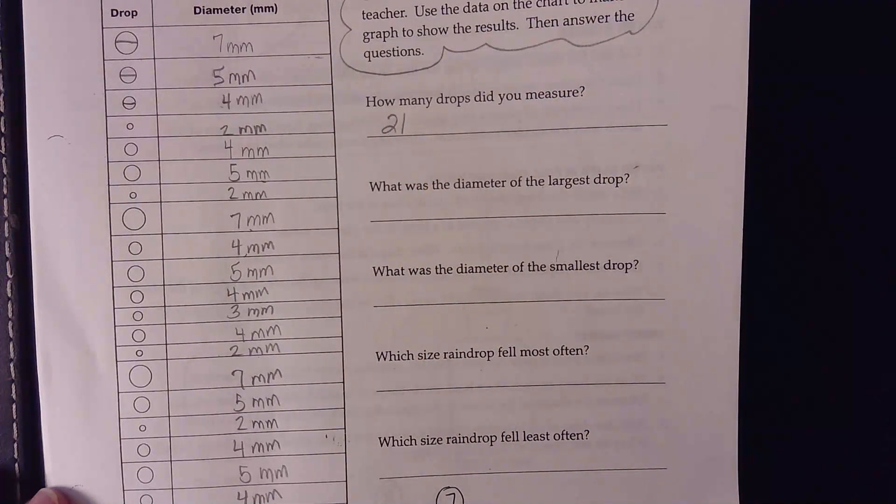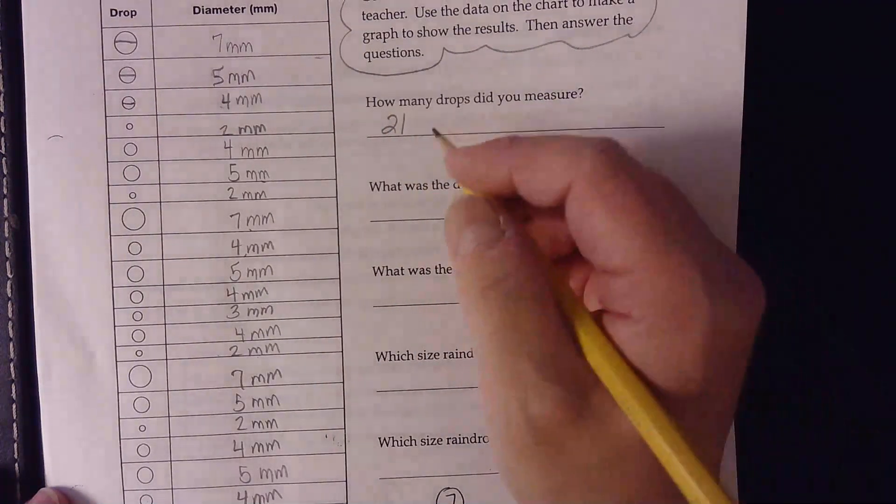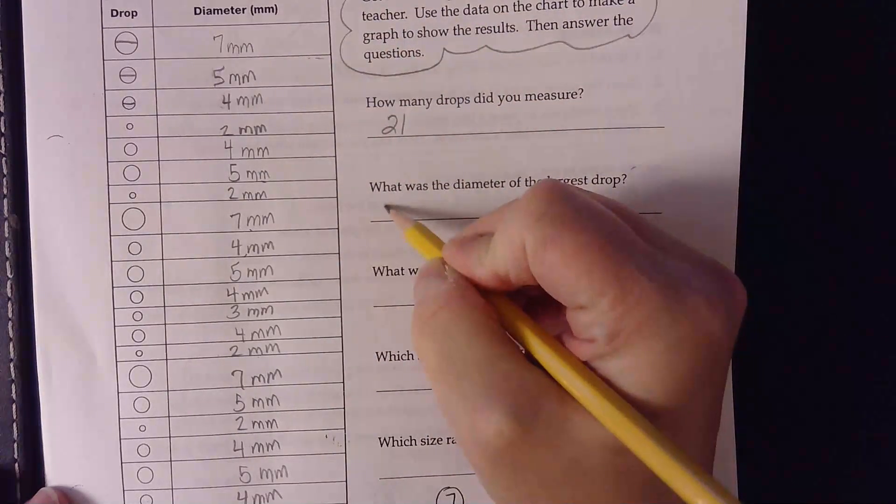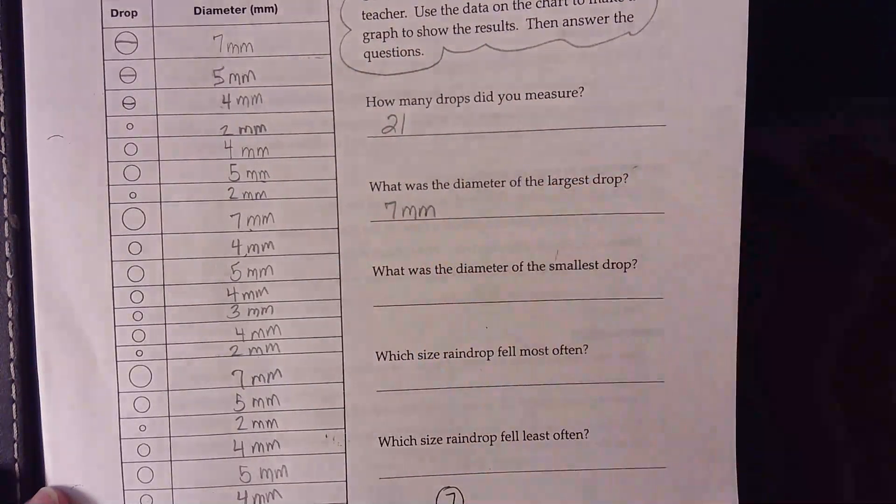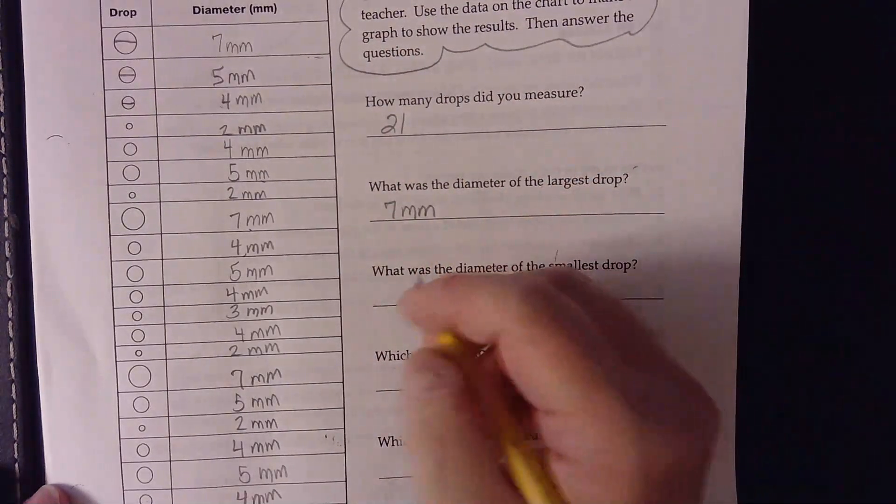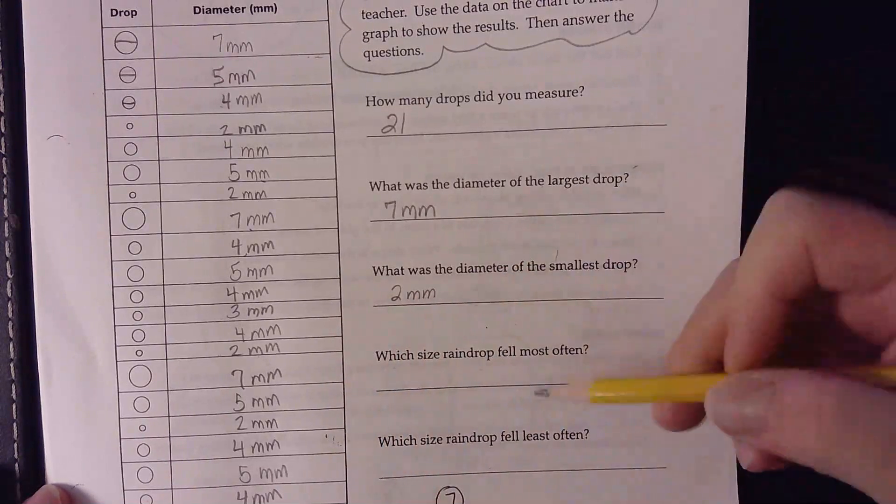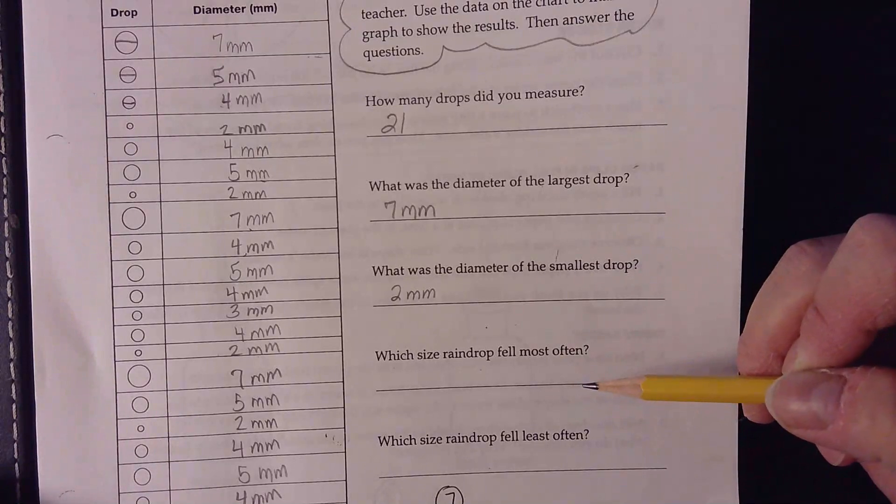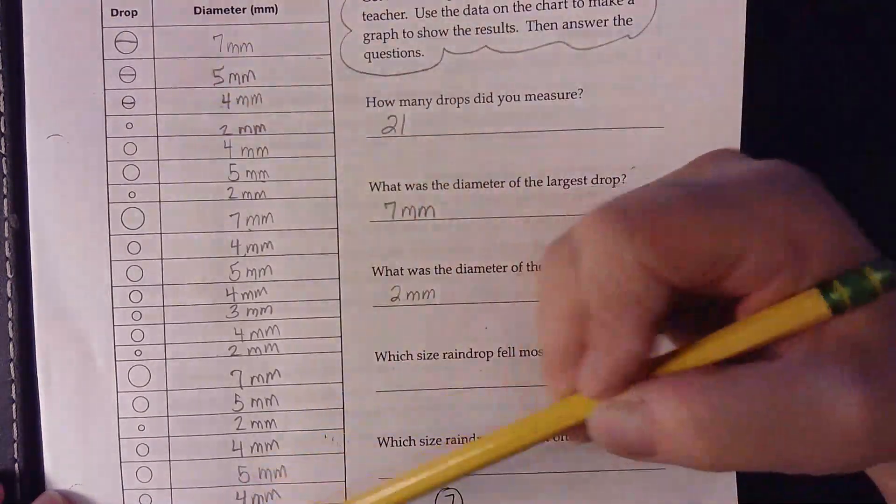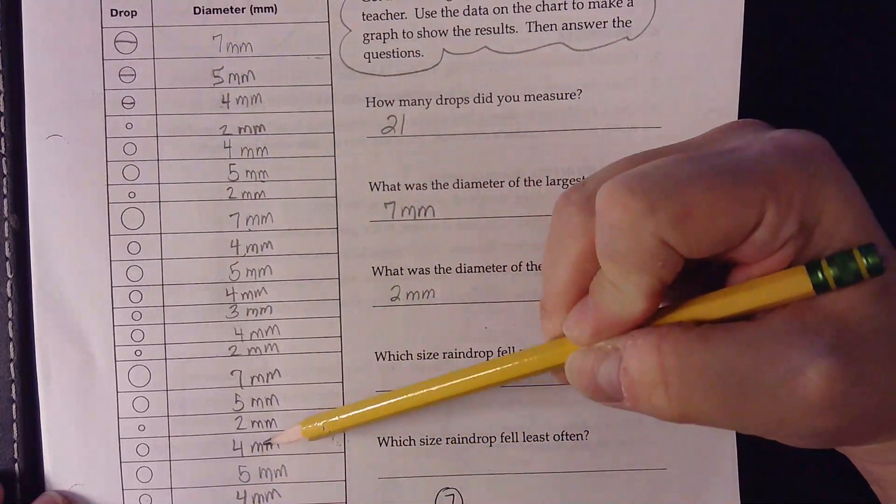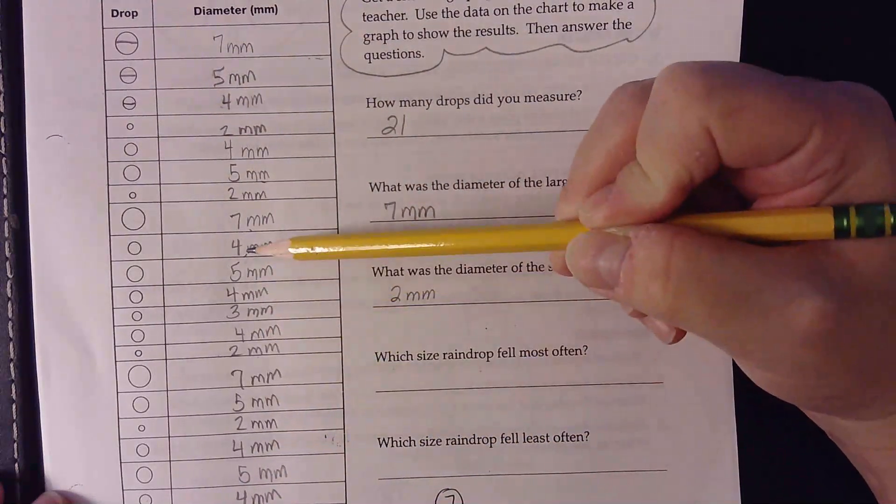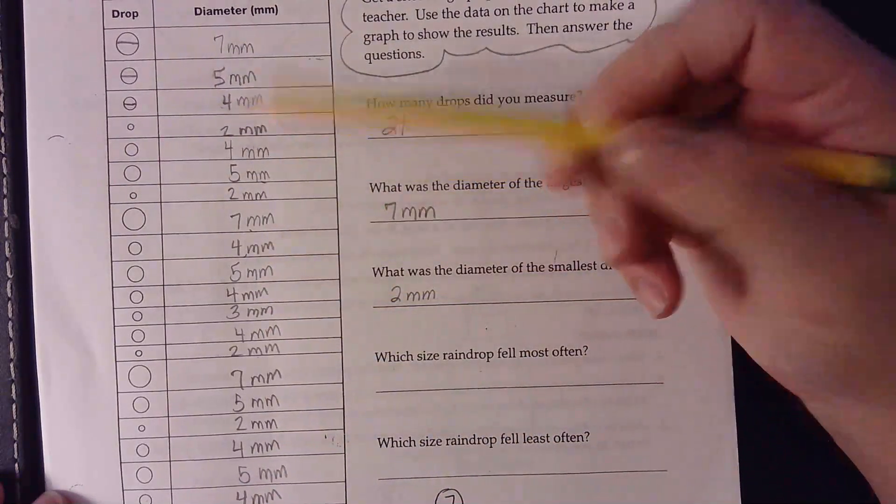What was the diameter of the largest drop? The largest one was seven millimeters. The smallest one was two millimeters, and the smallest one was two millimeters.